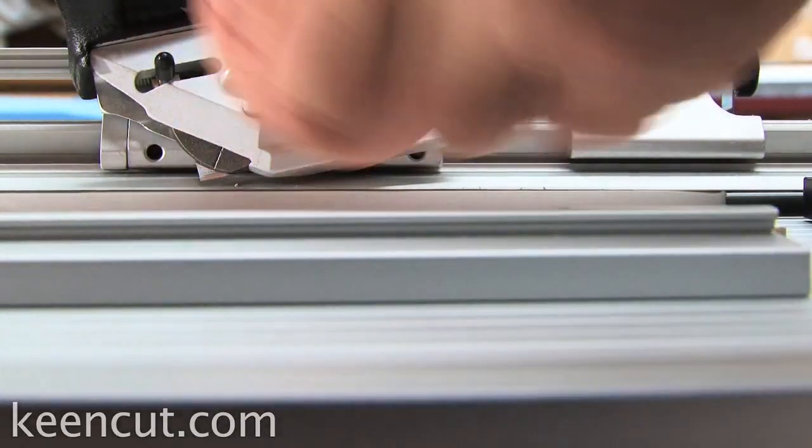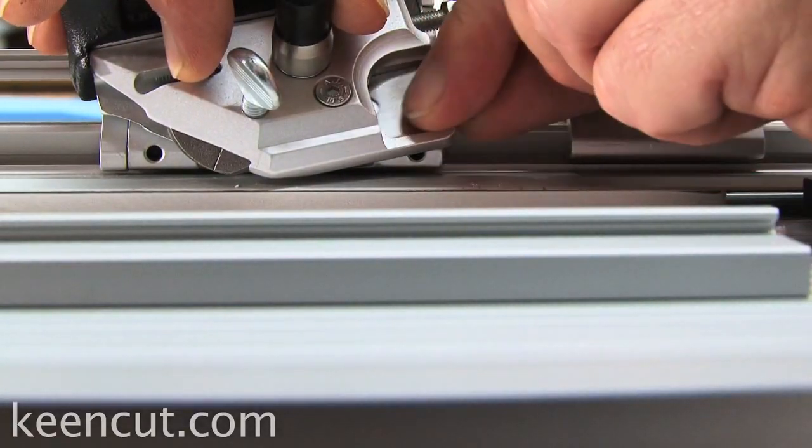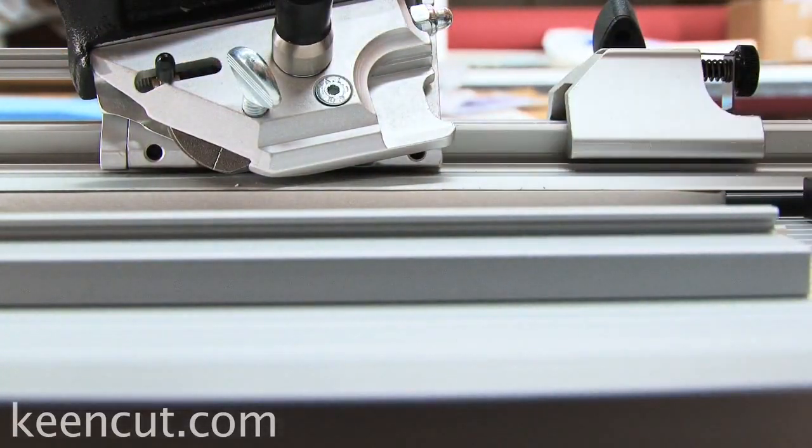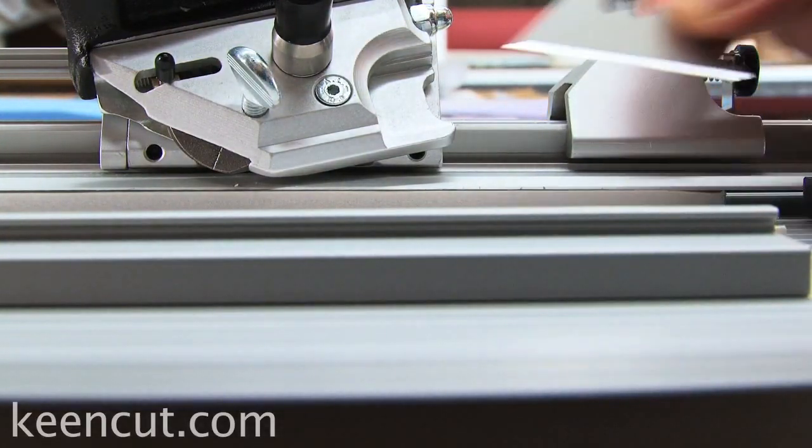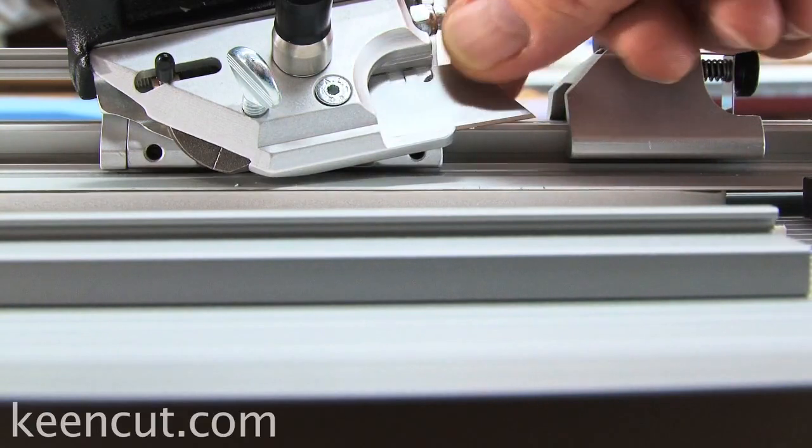So first thing we're going to do, we're going to unloosen the blade, take out our traditional regular mat blade, and now we're going to add in the traditional utility blade, the angled traditional utility blade.